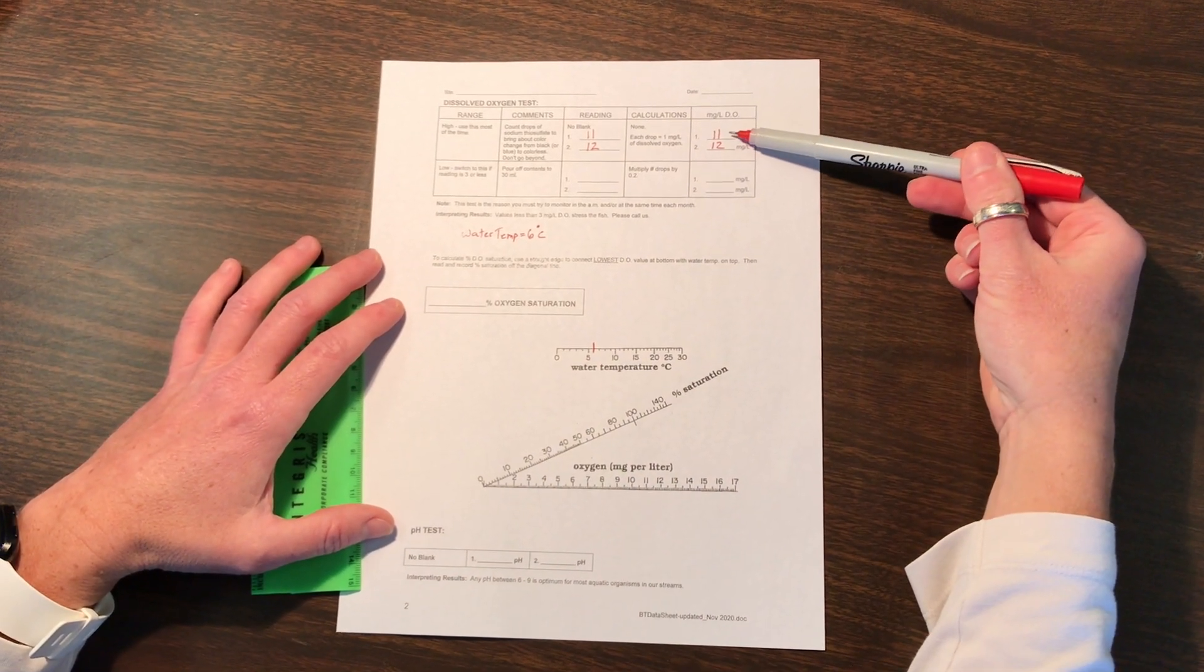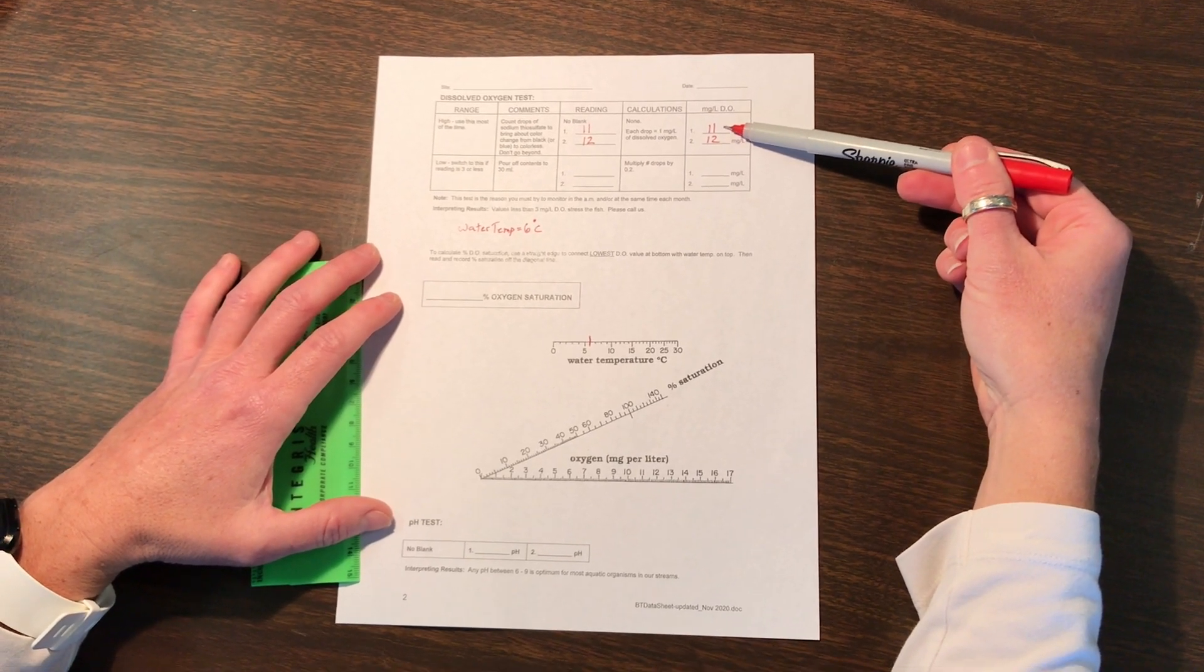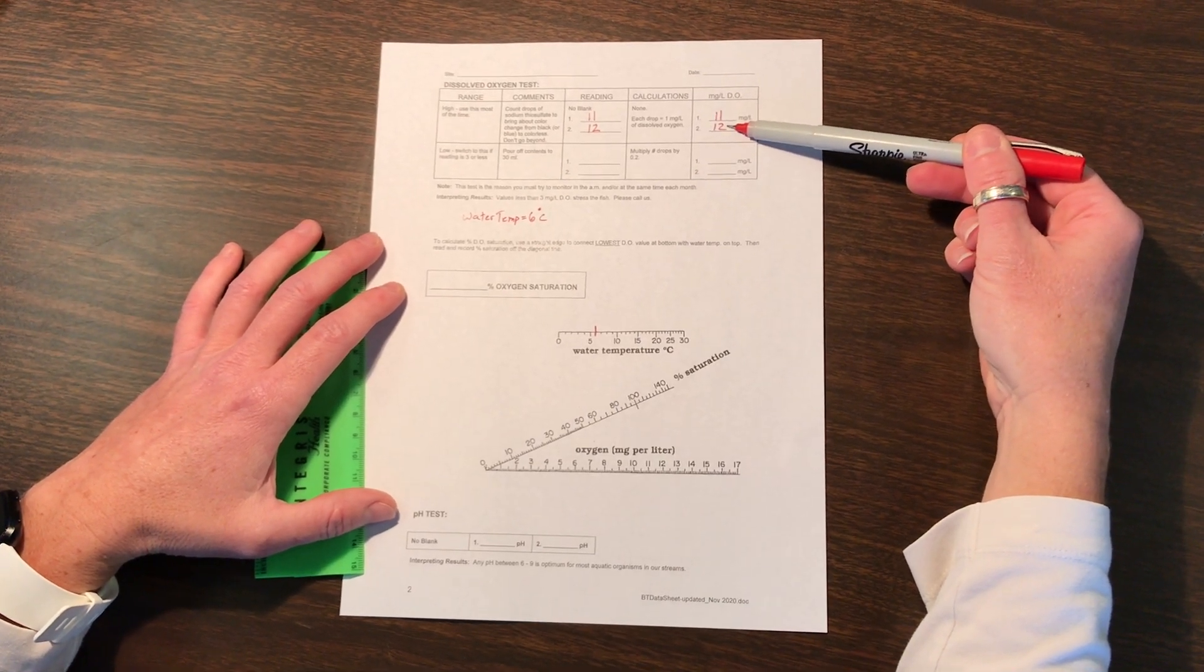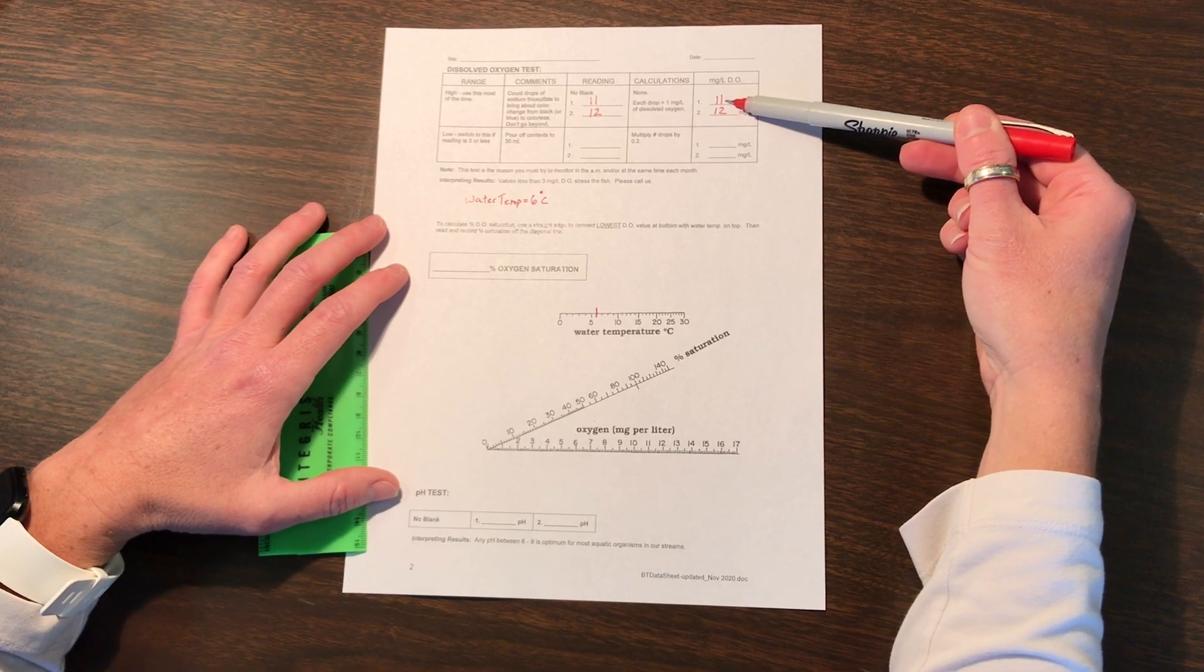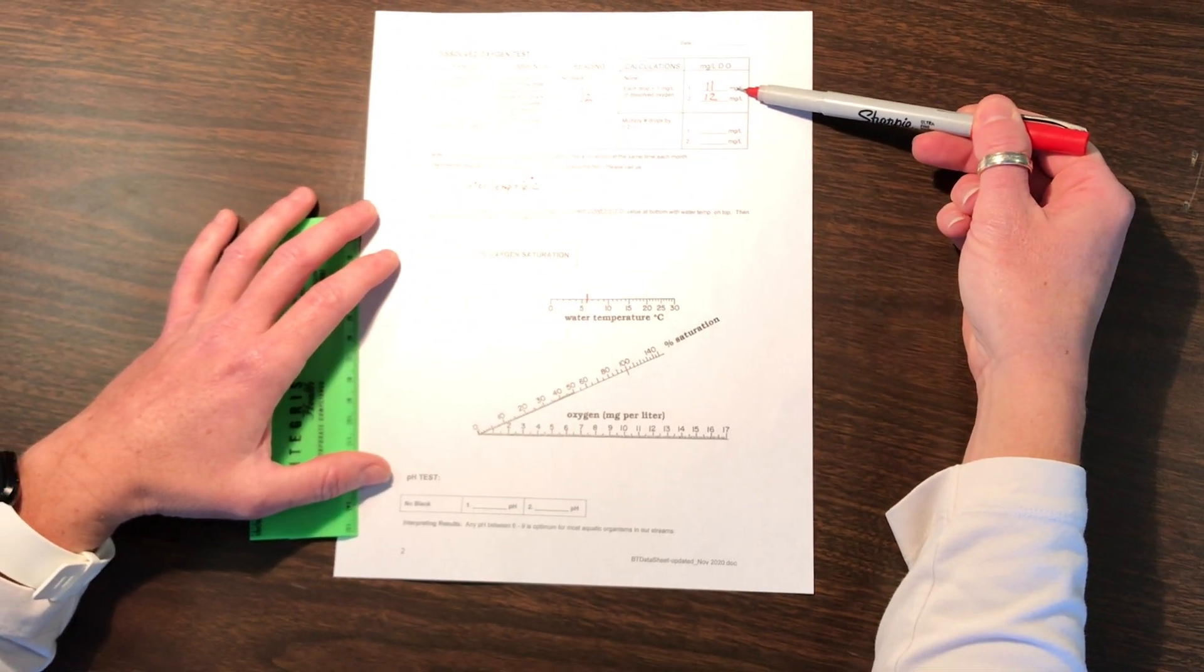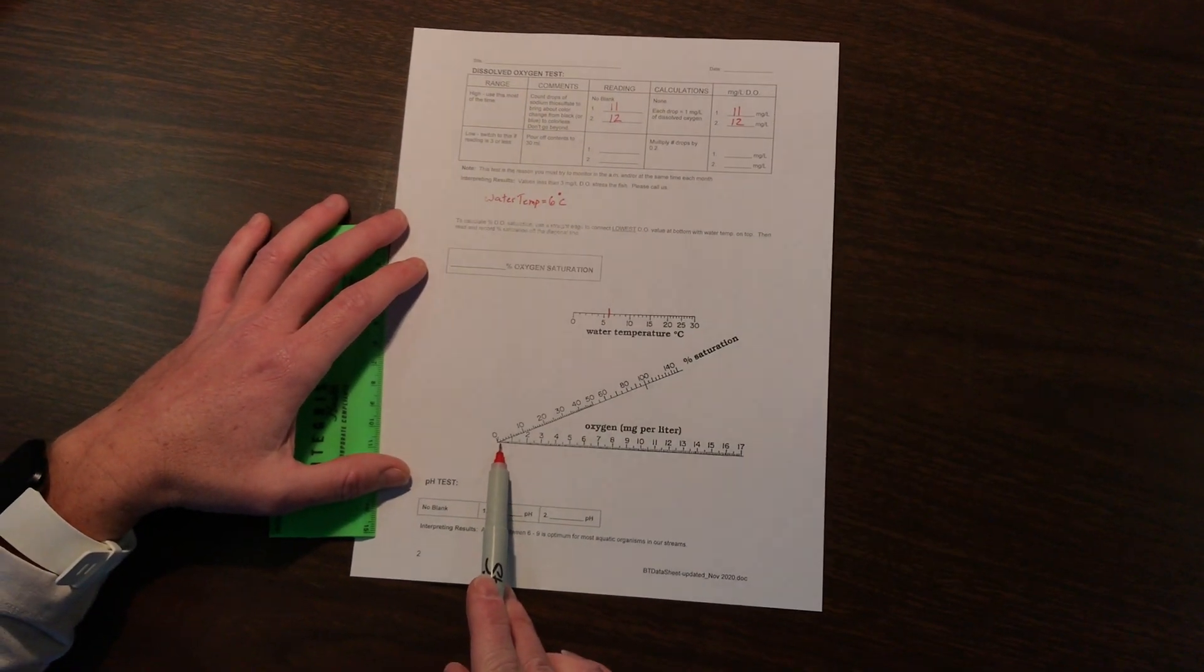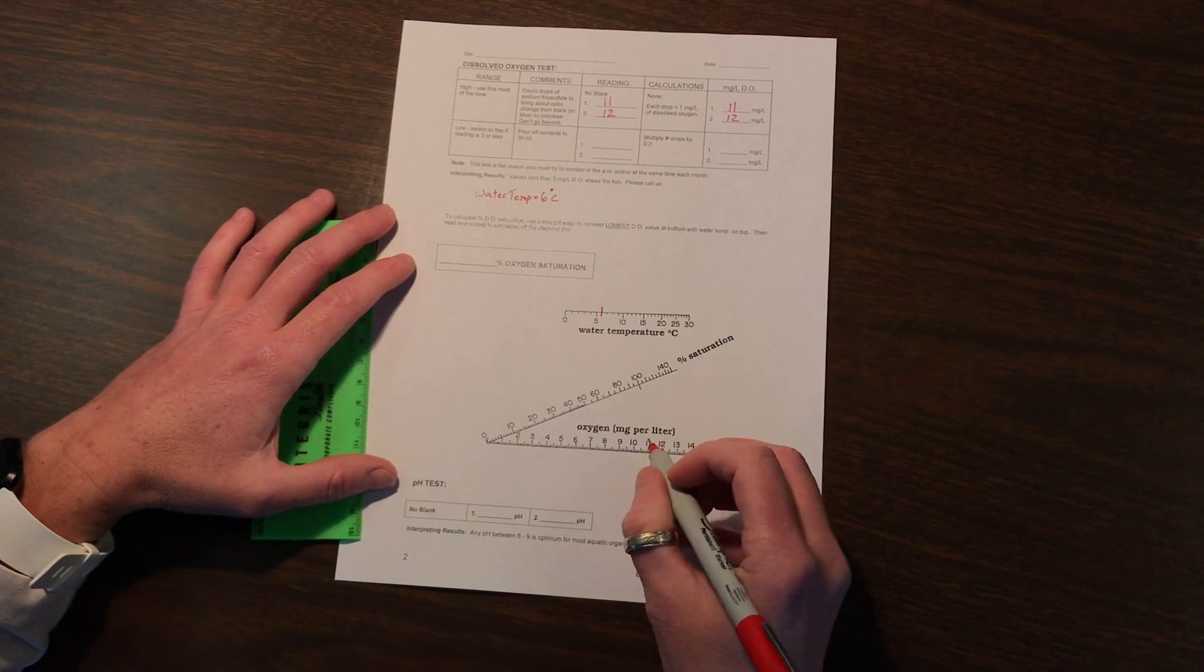With our dissolved oxygen, since we have two different numbers, they are still within good quality assurance—within at most 2 drops difference. We have a 1 drop difference. Always use the lesser, the lower amount of oxygen. In this case it would be 11 mg per liter. Our mg per liter of oxygen is going to be this bottom axis, so we'd make a mark at 11.